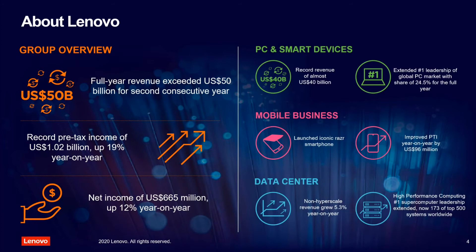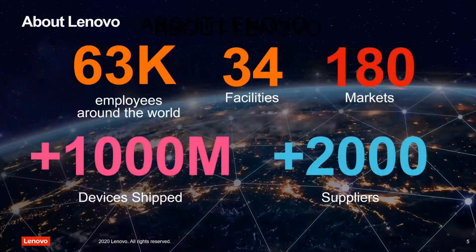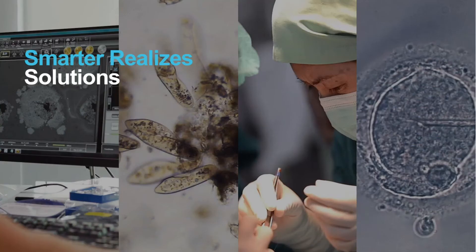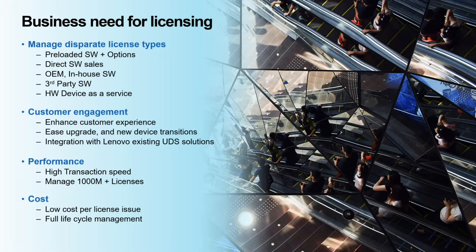A little bit about Lenovo. Lenovo is a $50 billion-a-year company and the number one PC manufacturer on the planet. We average about a billion devices shipped a year, with 2,000 suppliers, covering 180 markets and 34 facilities. This presents a unique set of problems that allow us to sell at scale, but we need to manage and license those solutions at scale as well.